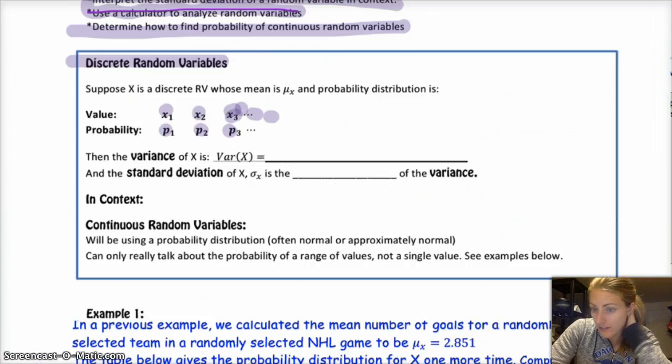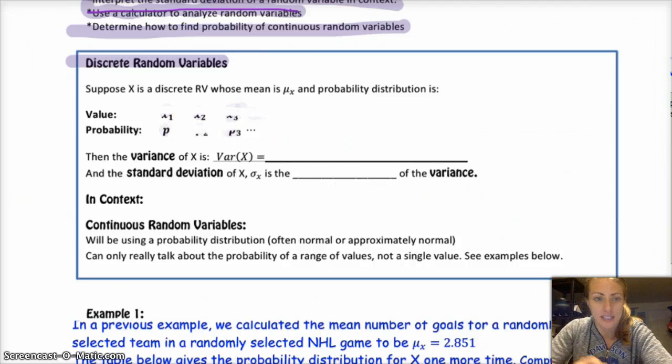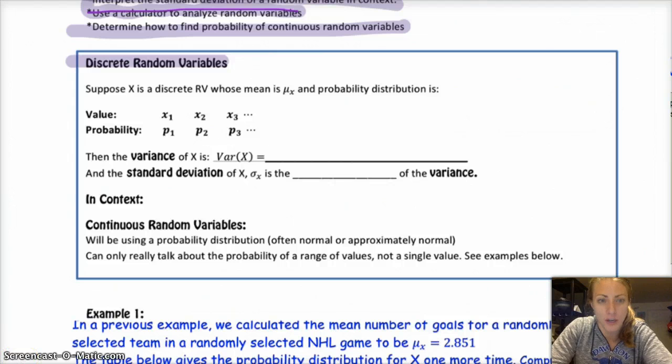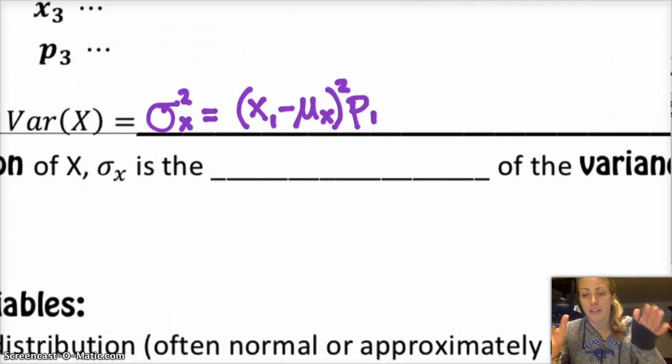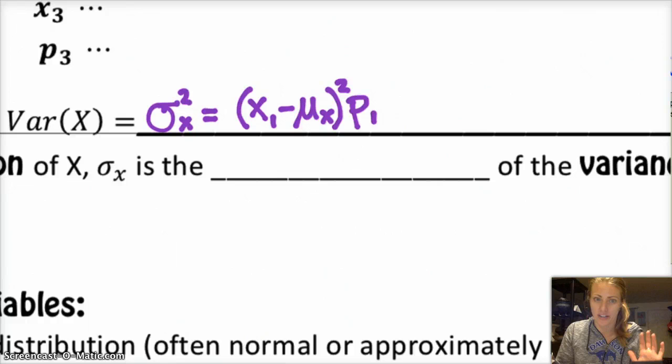So, the variance of x. Remember, variance and standard deviation measure the distance from the mean. So if we already know the mean, then we can find the standard deviation and the variance. The variance is the following. Variance, remember, we can write as sigma squared because standard deviation is just sigma, and then we square it to get our variance.